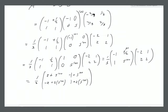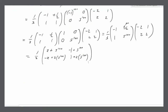That's our answer. With the 1/3 factor included, A^100 equals (1/3) times [[2 + 5^100, -1 + 5^100],[-2 + 2·5^100, 1 + 2·5^100]]. If we want, we can take a calculator and plug in 5 to the power of 100. And if we had some other exponent, it's just as easy to go through this process.